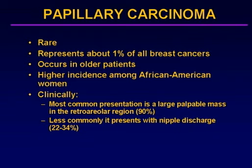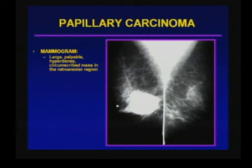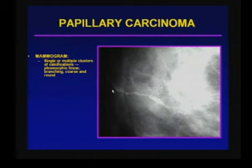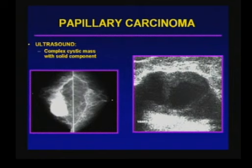Lastly, I will speak about papillary carcinomas. They are rare, representing about 1% of all breast cancers. They occur in older patients, with a higher incidence among African American women. Clinically, most — about 90% — present with a large palpable mass in the retroareolar region; less commonly they present with nipple discharge. On mammogram, the classic example is a large palpable hyperdense circumscribed mass, typically in the retroareolar region. Less commonly one can see single or multiple clusters of pleomorphic linear branching calcifications — here is a beautiful example of casting calcifications with almost a snakeskin appearance that has been described with papillary DCIS.